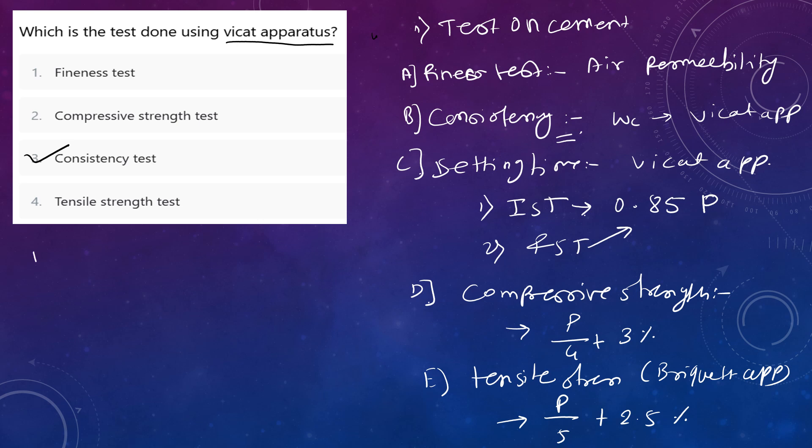Last is soundness test. First, soundness is conducted in Le Chatelier's test—in this we find only free amount of lime. Then autoclave, which is also a test for soundness. In this, we find free content of magnesium and lime. The water content required for soundness is 0.72 to 0.78 P, or 72 to 78% of consistency.